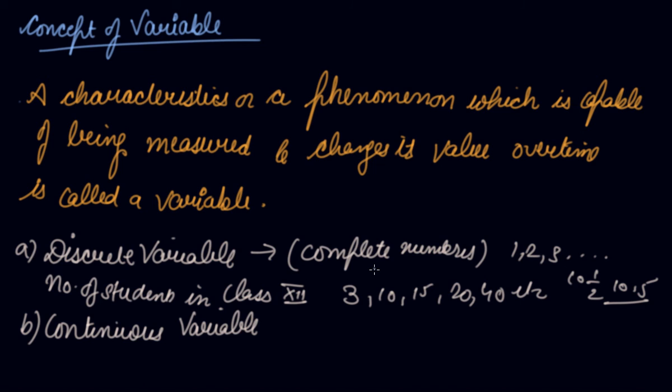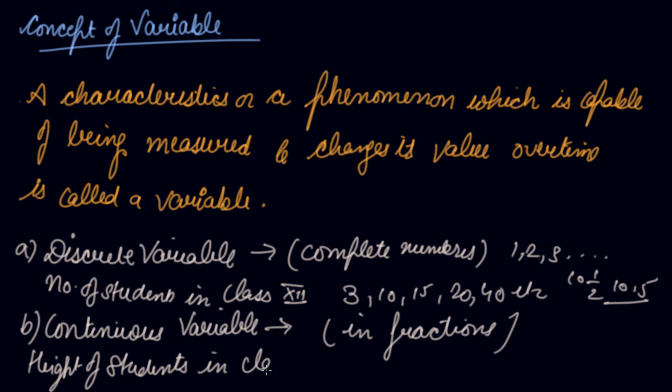So when the variables are expressed in complete numbers, it is a discrete variable. Whereas if we talk about the continuous variable, which means in fractions - let's say if I talk about the height of students in class 12, height can be like 5 inches, 5.1 inches, 5'2", or 5'3", right? So these are not whole numbers, these are fractions. So when the value of continuous variables is a fraction, it is known as a continuous variable.